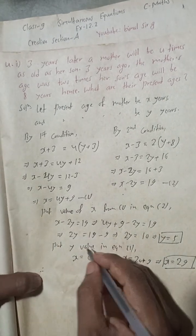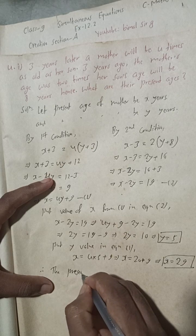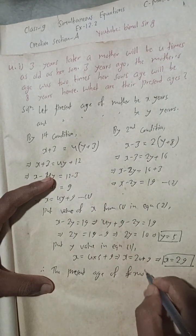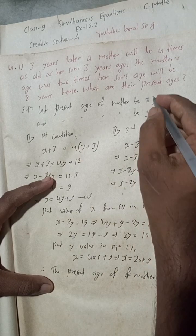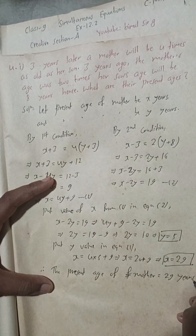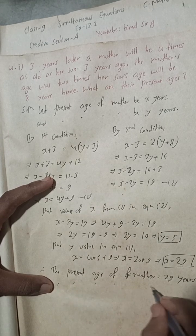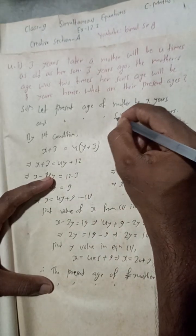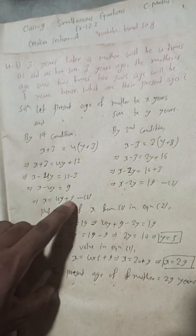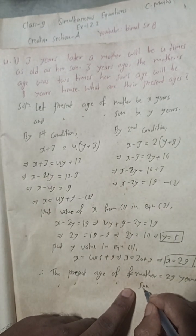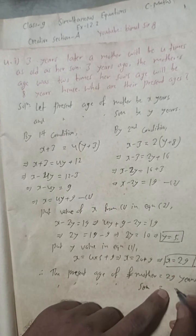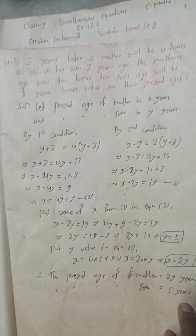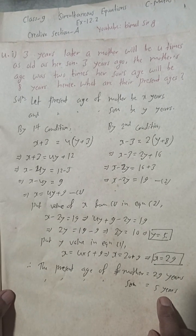Therefore, the present age of mother is x = 29 years, and the present age of son is y = 5 years. So the required answer for question 4i is: mother is 29 years old and son is 5 years old.